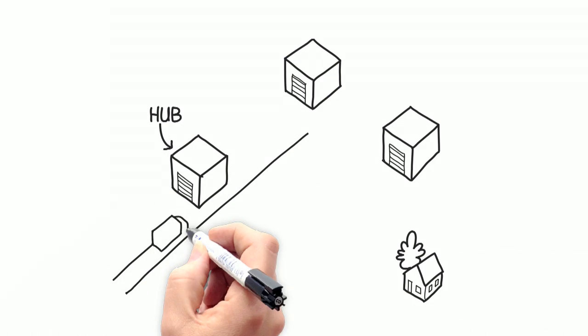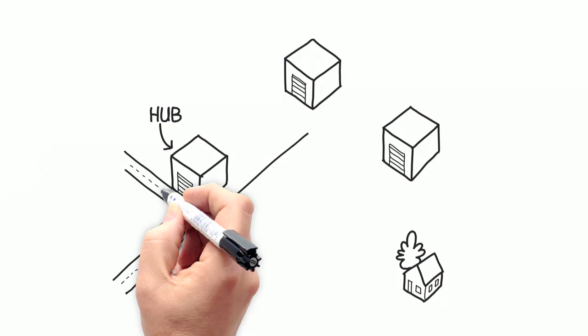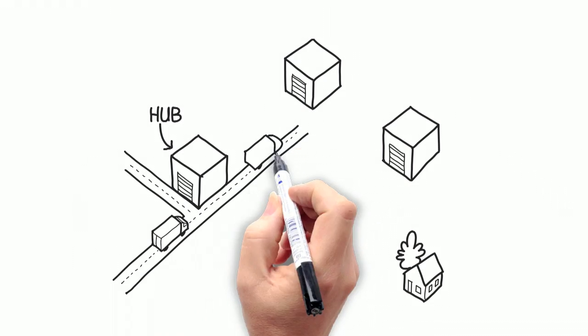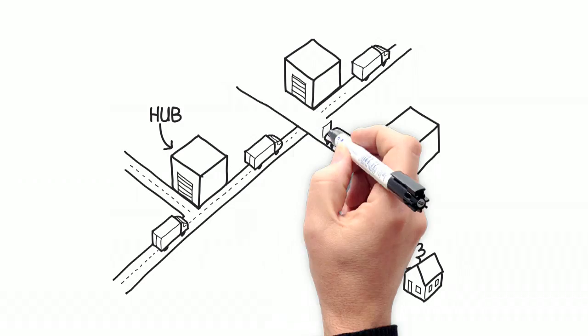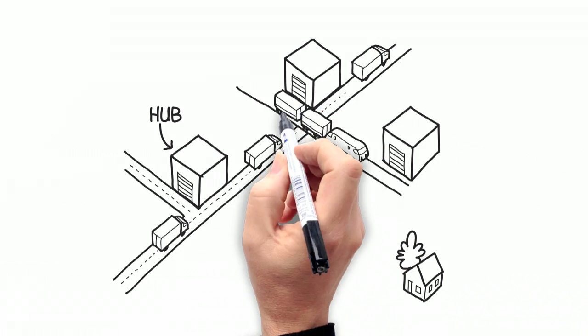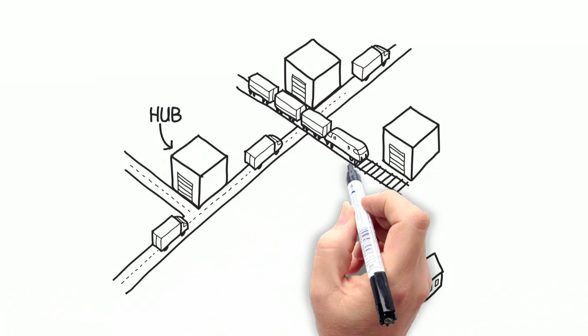Products moving over this open and interconnected network belong to many different parties, who have in common that they are users of the physical Internet. In this way, the physical Internet is enabling full horizontal and vertical collaboration.